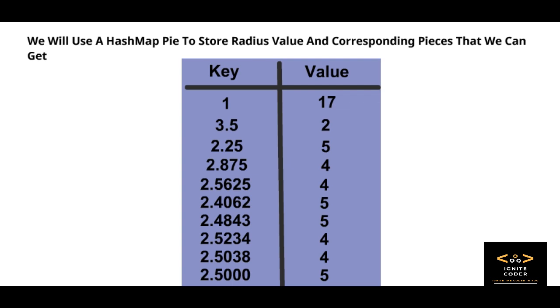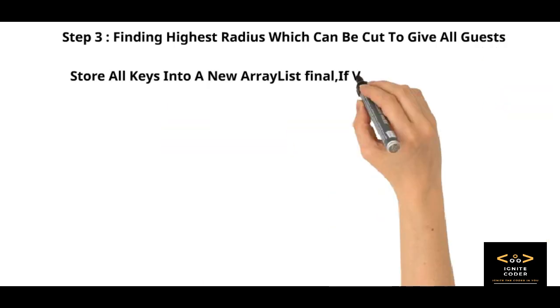And we got the answer at 2.0. The loop terminates. Now we got the full hash map.